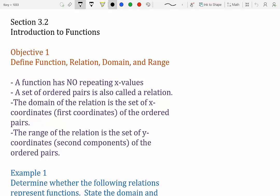The domain of the relation is the set of x-coordinates, that's your first coordinate of the ordered pair. The range of the relation is the set of y-coordinates, that's the second coordinate or component of the ordered pair.